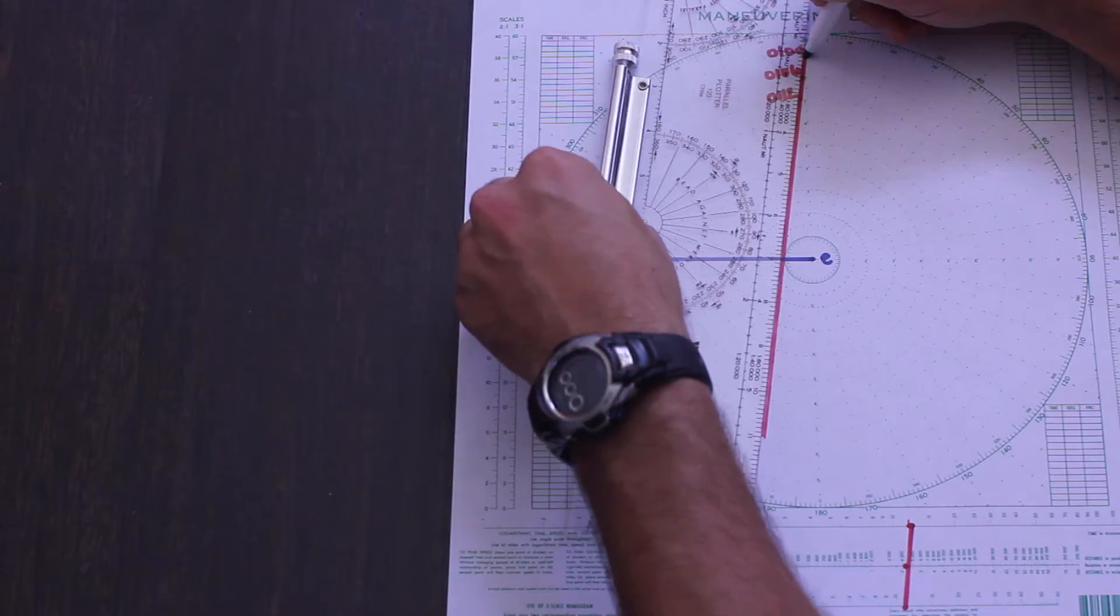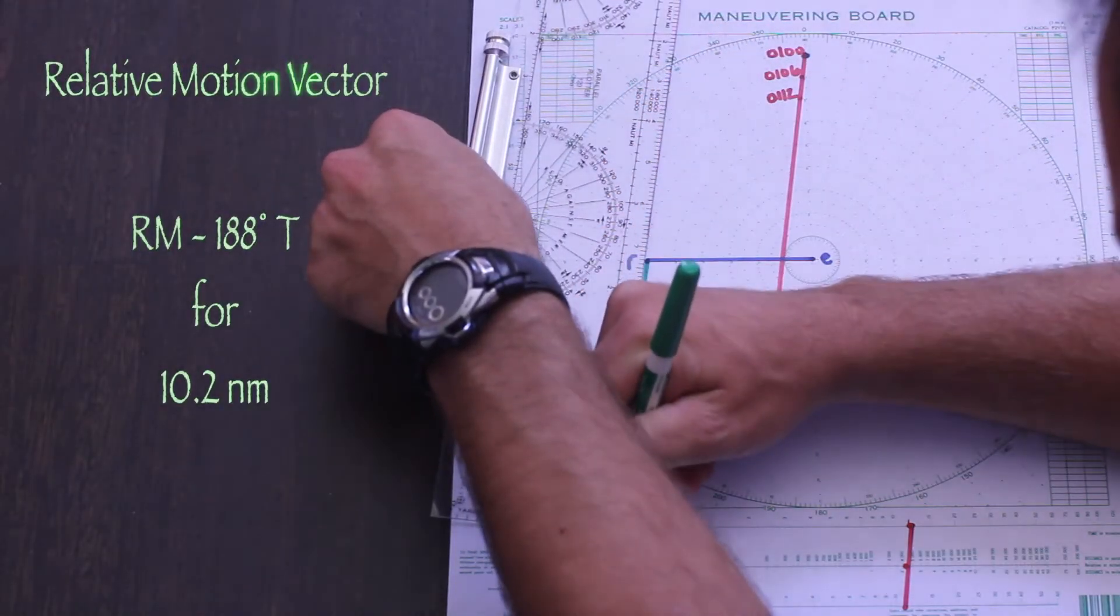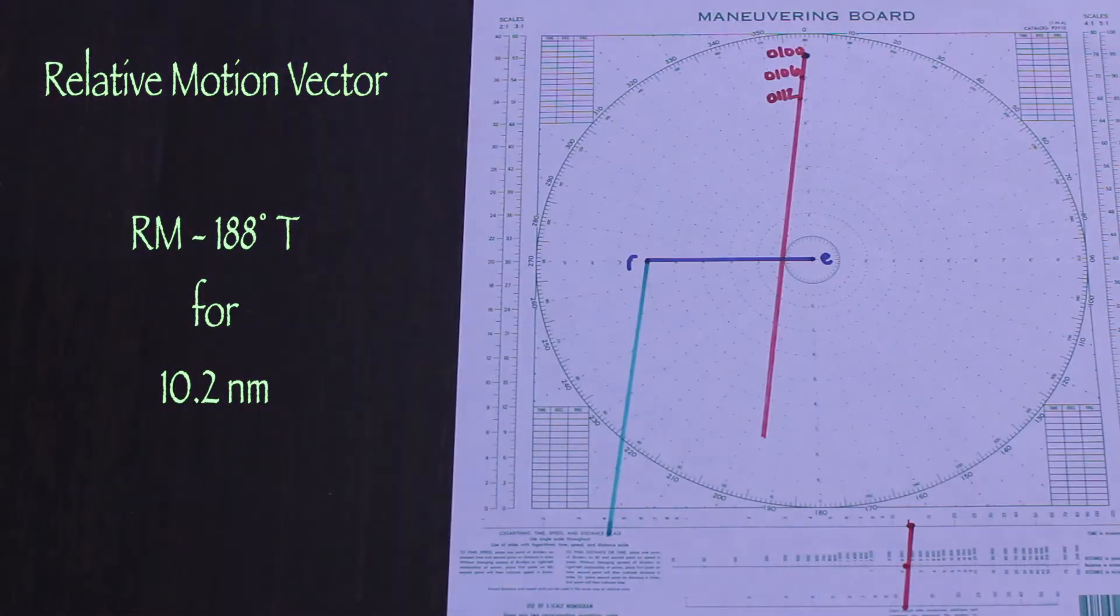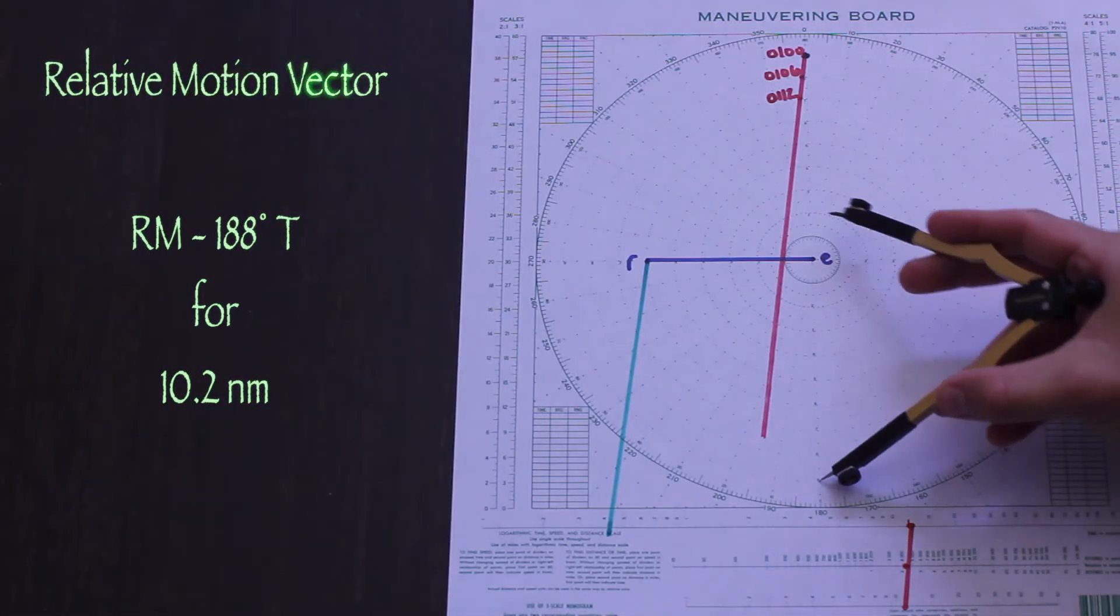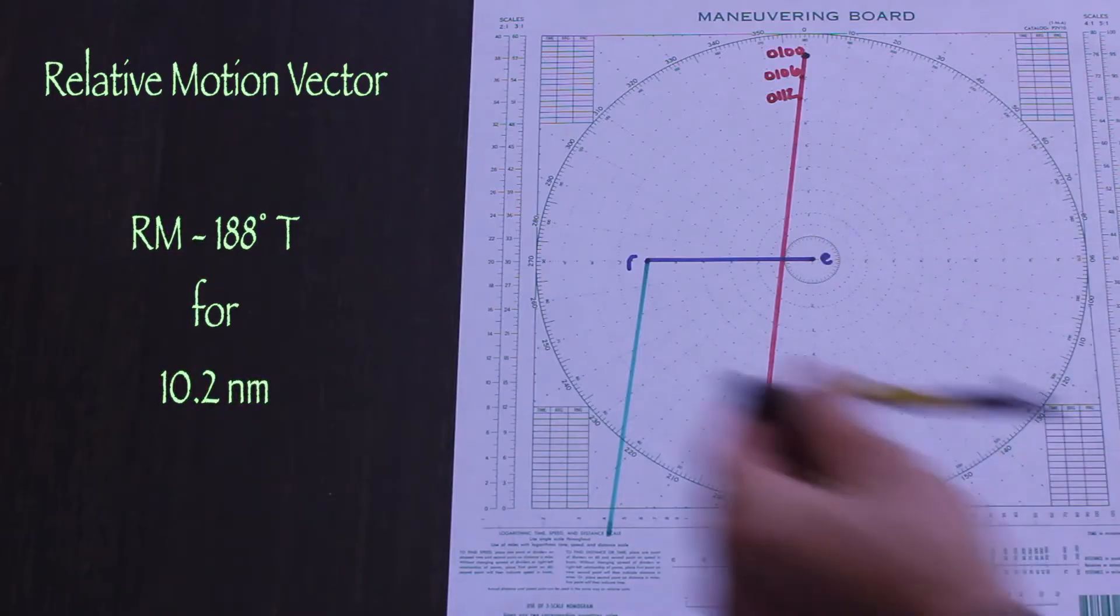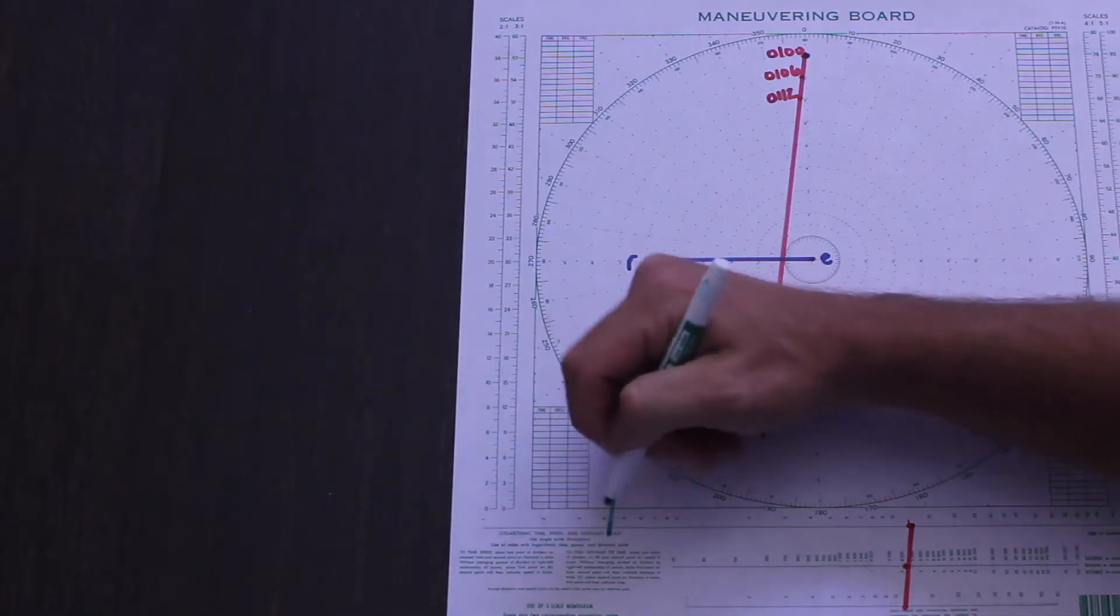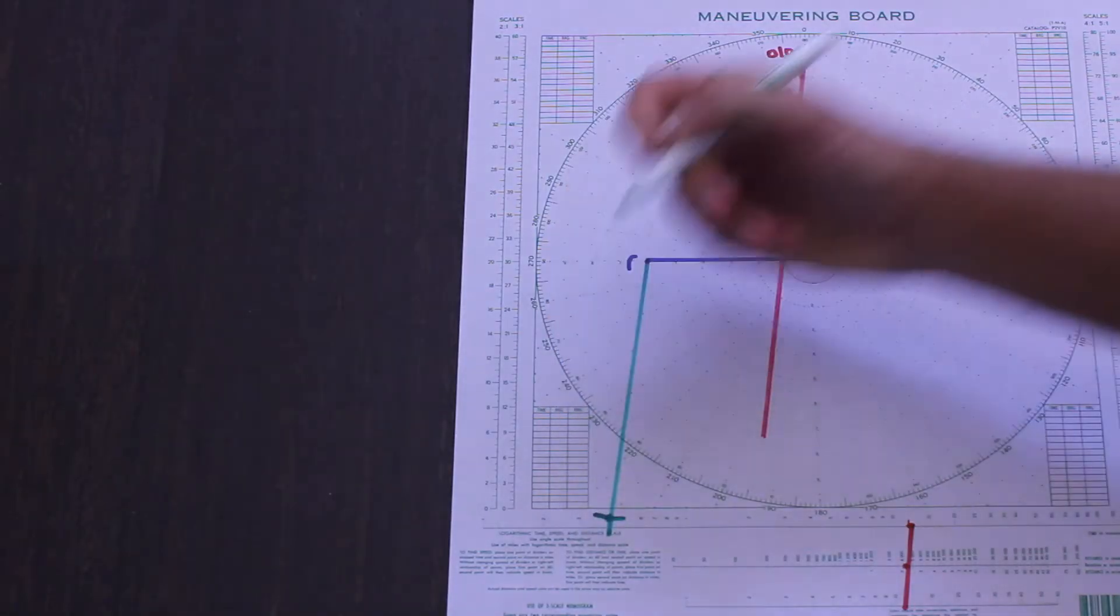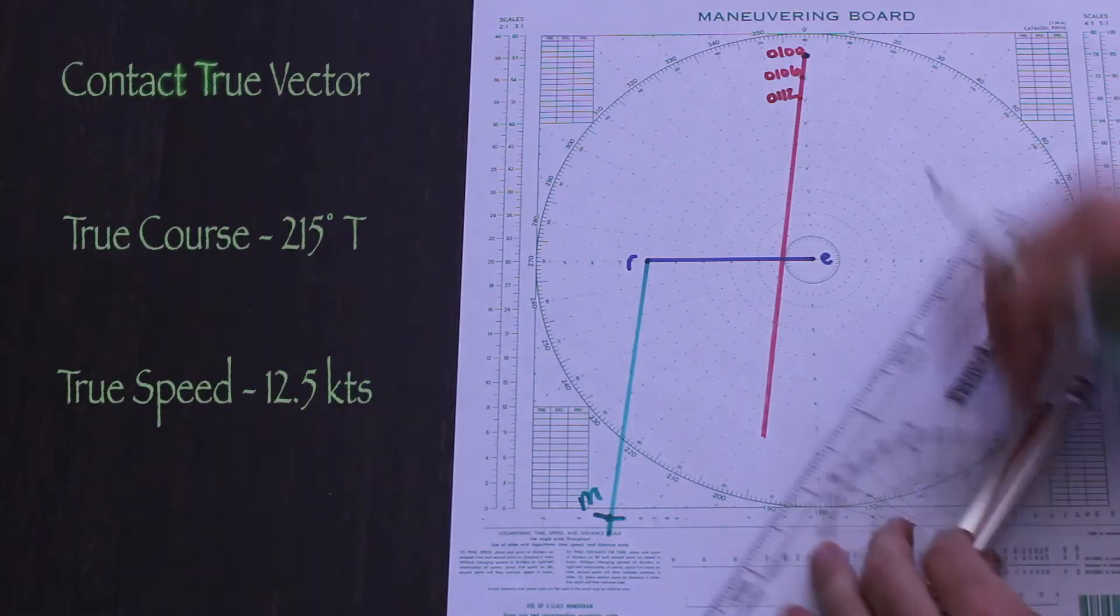Next we'll use the relative motion line to draw the relative motion vector, and it is measured out a distance equal to the speed of relative motion, or 10.2 knots. It's drawn in green in this case because I want to highlight something in just a minute. Finally, the remaining vector from E to M is the contact's true course and speed.